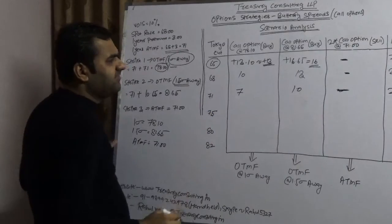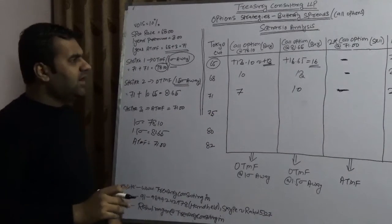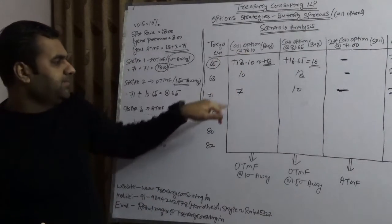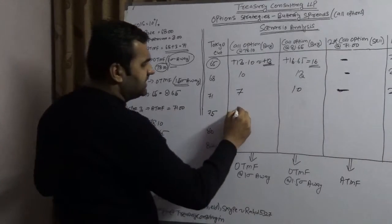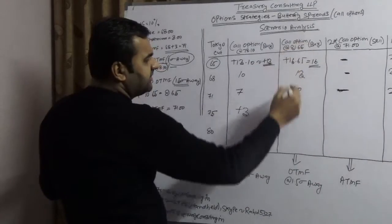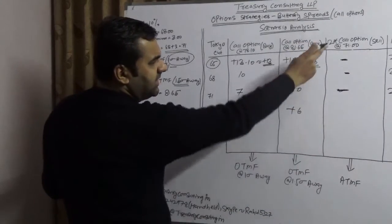In case of 75, there is a catch. You have a right to buy at 78.10, market is at 75. You will not execute, so you have a gain of plus 3 rupees. Here in case of 81, you have a gain of 6 rupees. But here it's a scene.